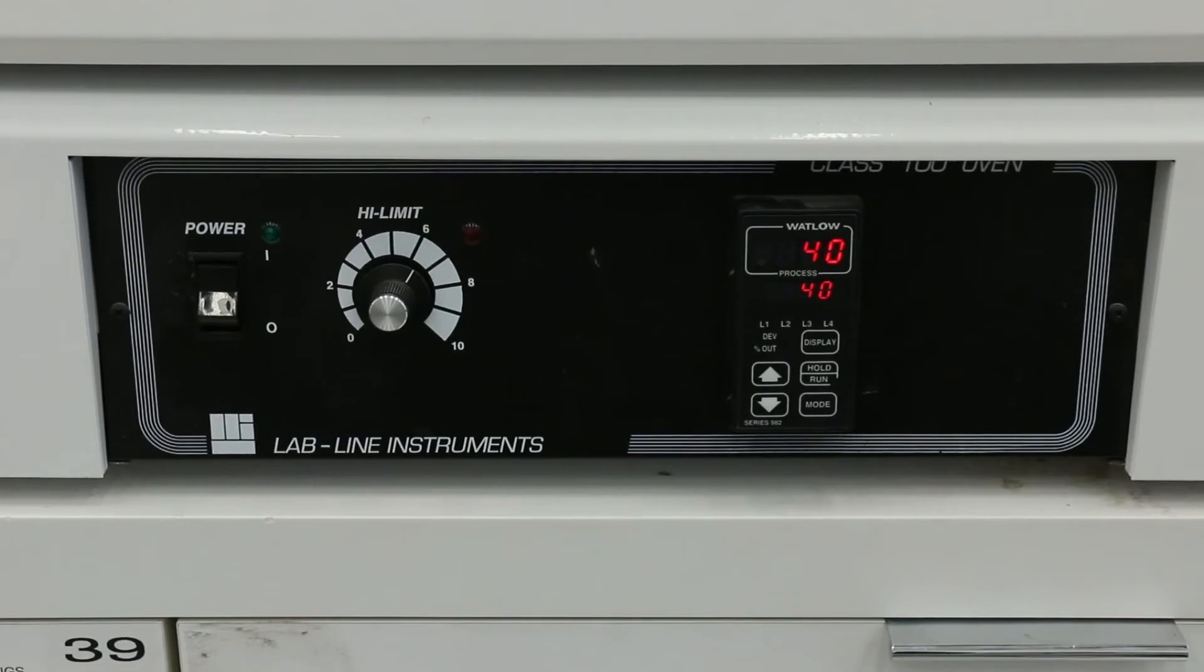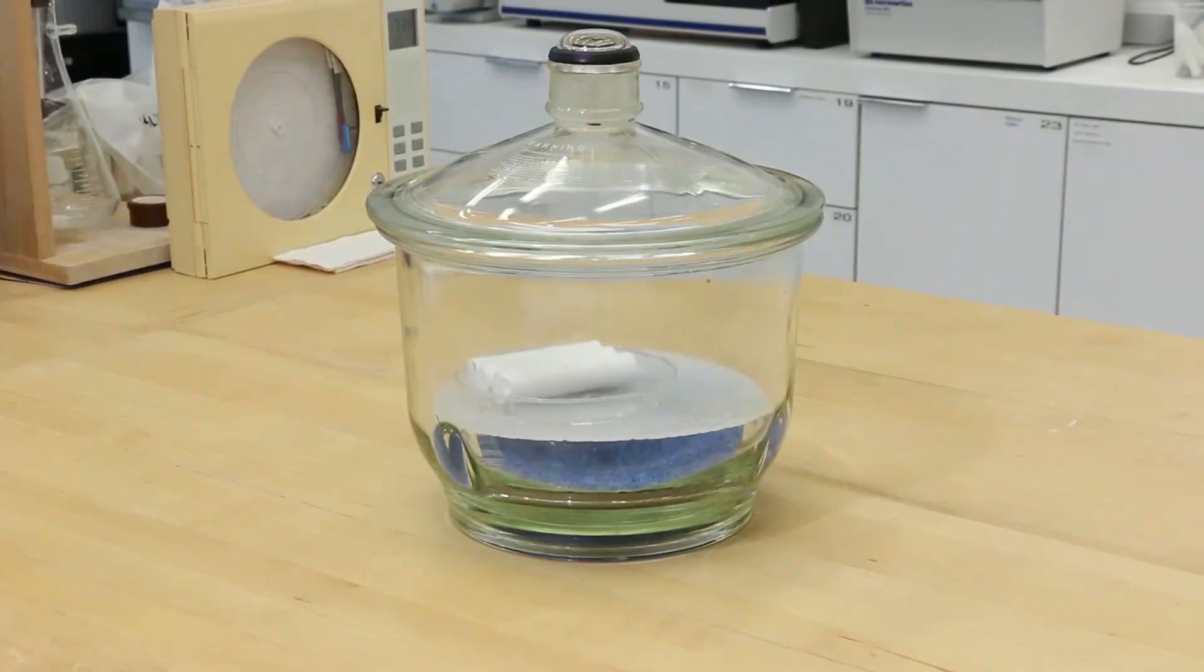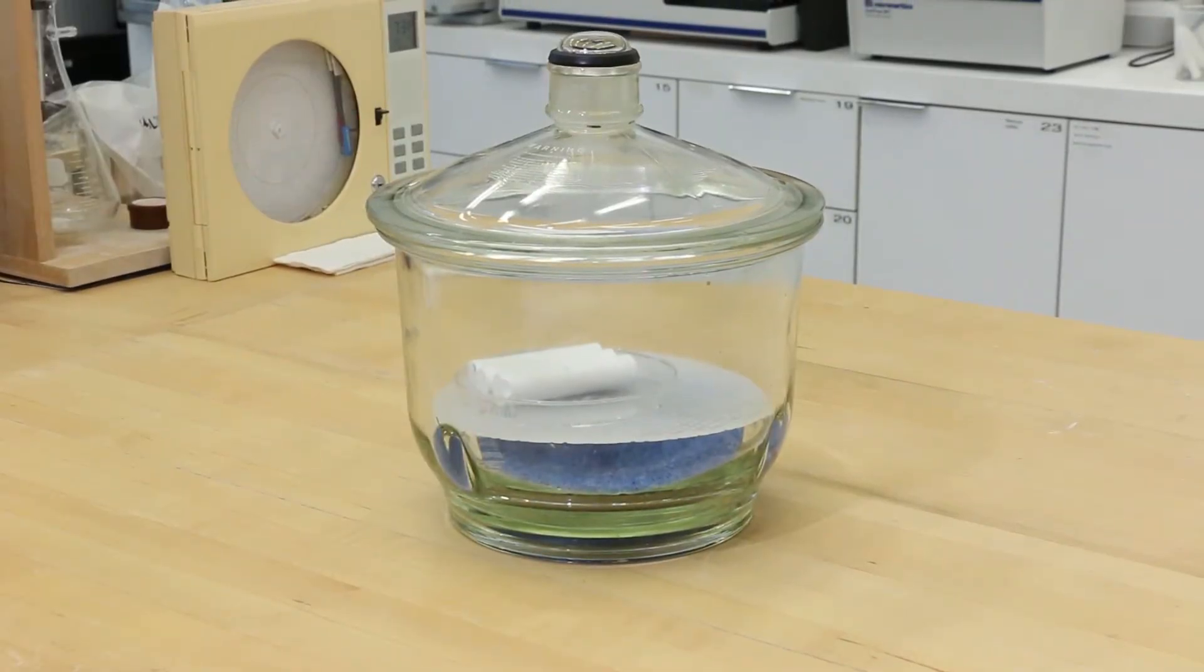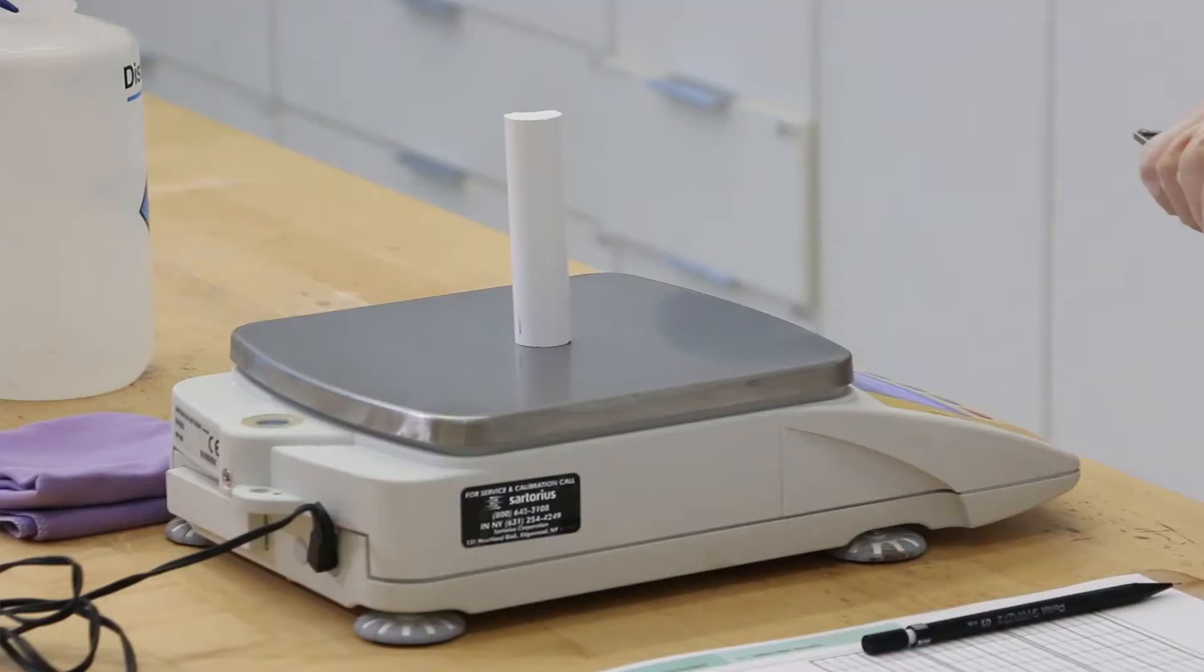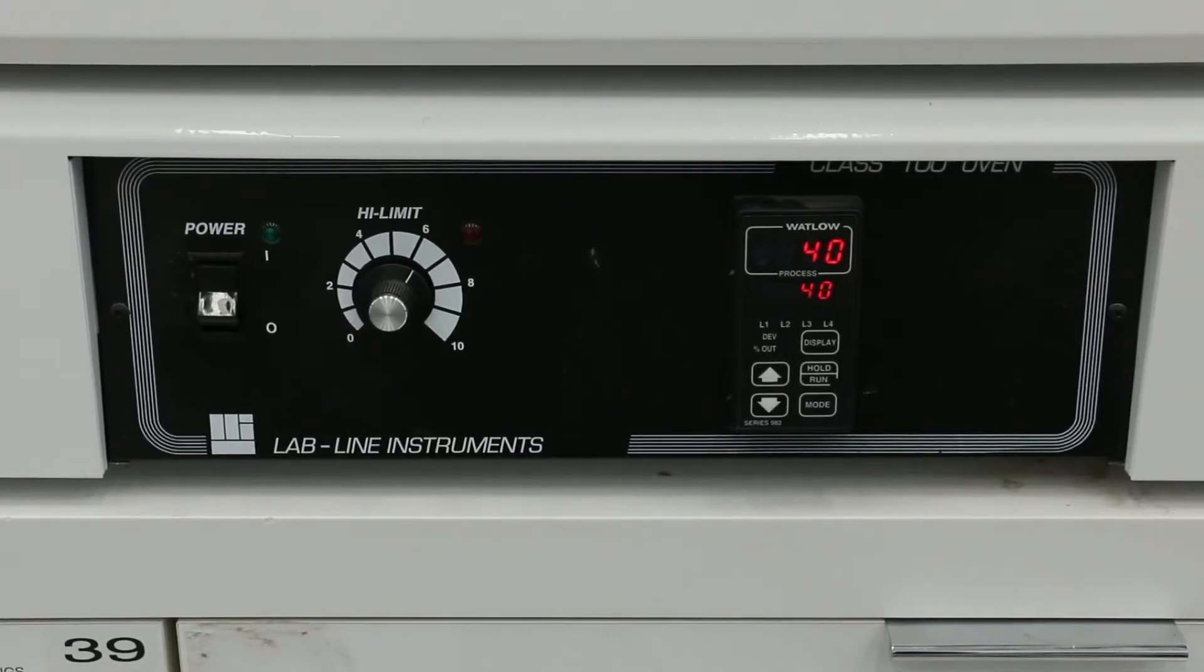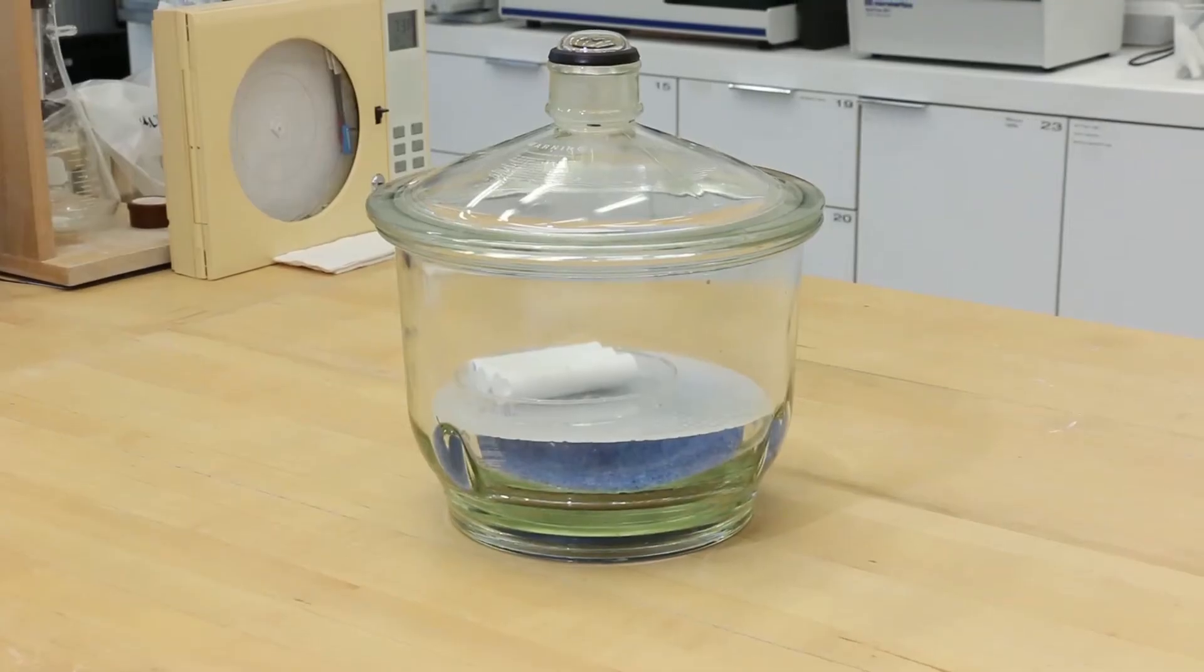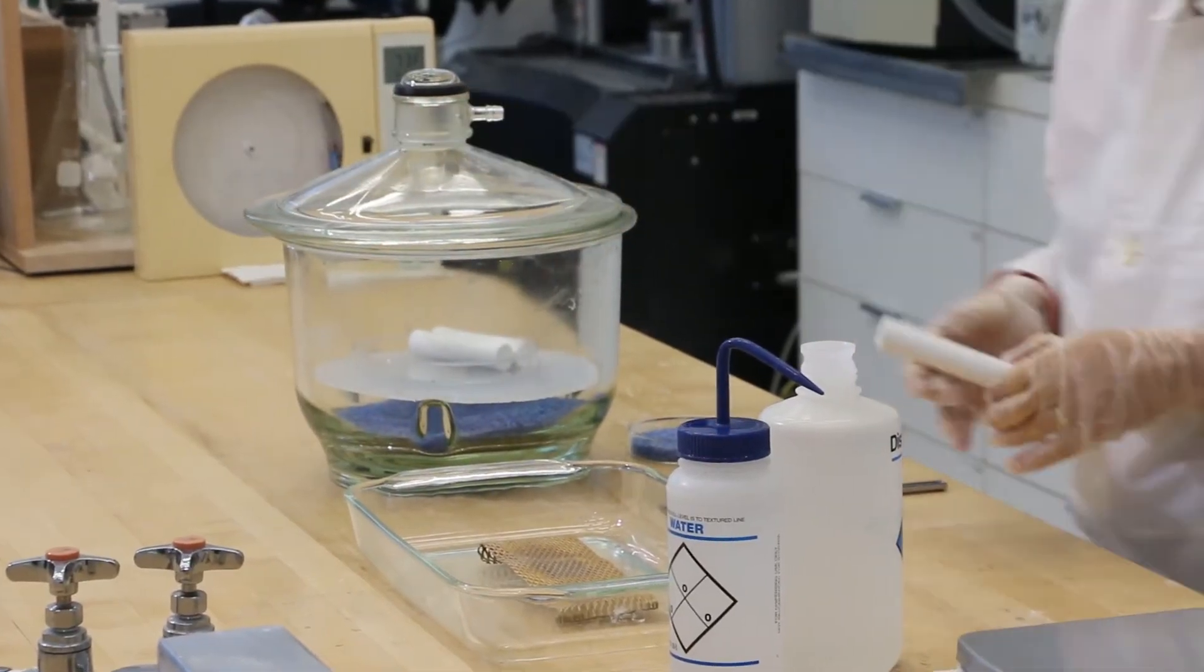Dry the specimens in an oven at 40 degrees centigrade for 20 hours and cool the specimens to ambient temperature in a desiccator for 4 hours before weighing. Repeat the drying and weighing procedure until a constant weight is reached. This condition is achieved when the difference between two successive measurements at a 24-hour interval is less than or equal to 0.1% of the weight of the specimen.